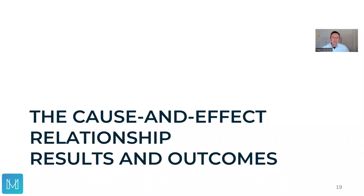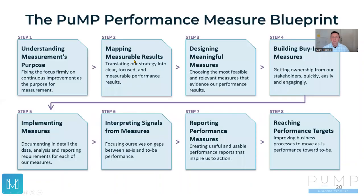Hi there. Let's talk for a couple of minutes about this cause and effect relationship between results and outcomes. Results and outcomes are synonymous terms to me, and we're using them to build a performance measurement framework that allows us to understand cause and effect from the work that we do, from the impact of the work we do on those outcomes across time and as it flows through. We're talking now about the performance measurement process called PUMP.